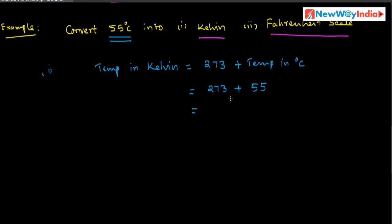Substituting this value: 273 plus 55. Adding these two terms: 273 plus 55 equals 328. The units here are Kelvin, capital K. Therefore the temperature is 328 Kelvin. So this centigrade value has been converted into Kelvin.